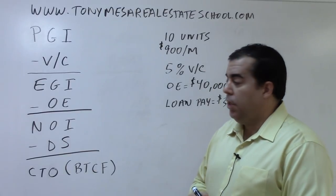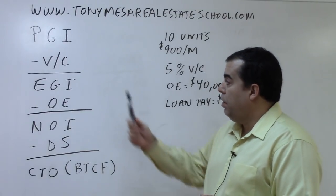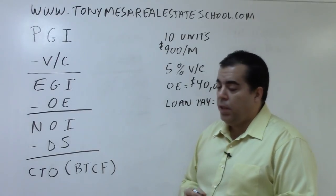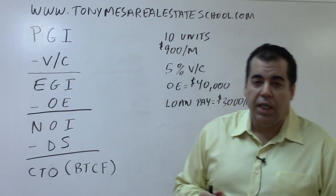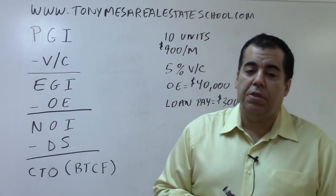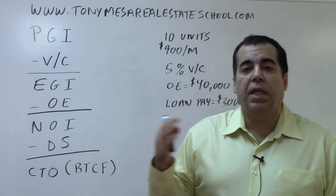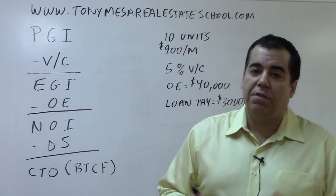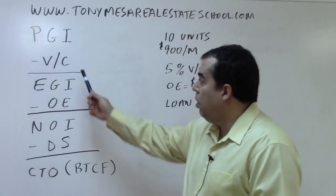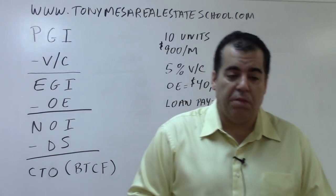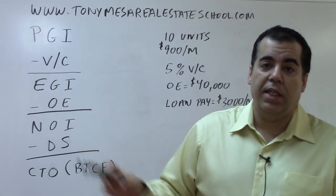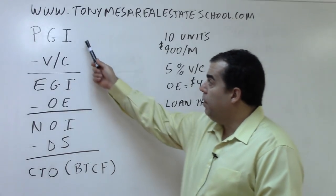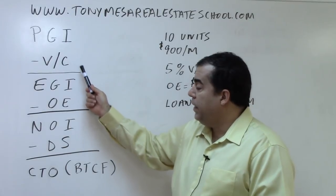From PGI we subtract what are called vacancy and collection losses. Even if it's a great property, you're still going to have some tenants move out — it might be empty for a month before you rent it out again. A collection loss is like a U-Haul at three in the morning: somebody's leaving and you're not getting all the money you're owed.